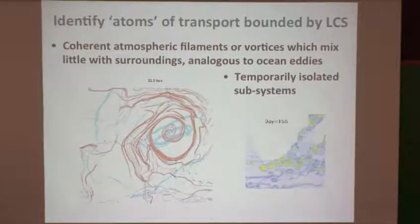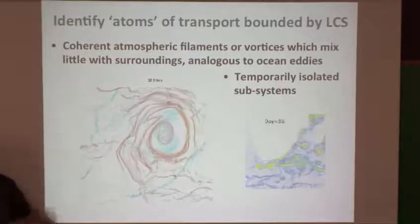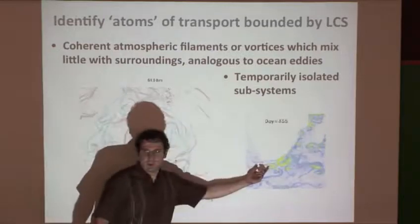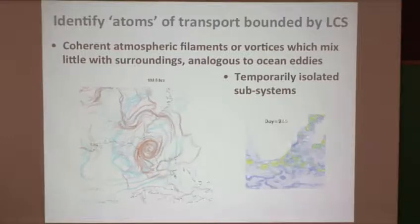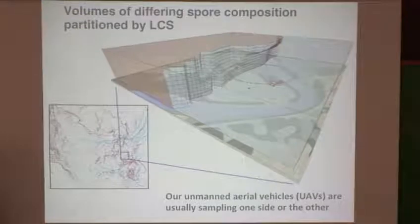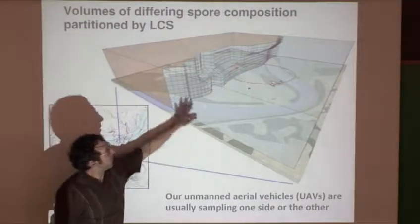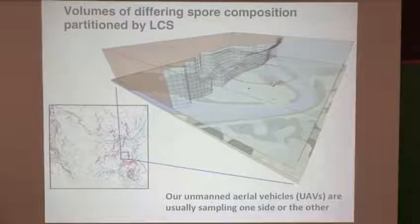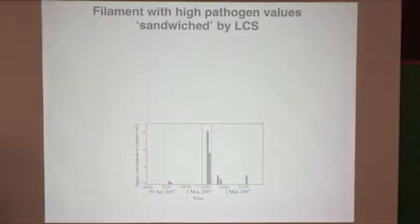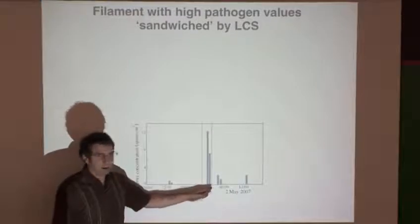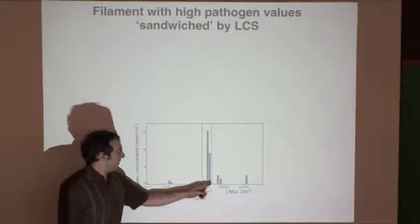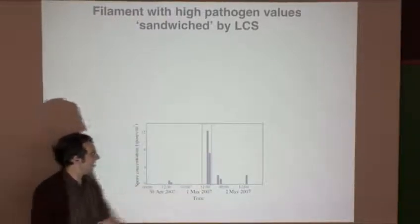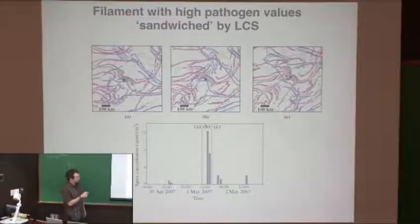We think high concentration regions are within atoms of transport bounded by LCS — similar to the eddies discussed this week transporting chlorophyll and warm water across the Atlantic. This is an artist's rendering of what it looks like near our sampling location, called Ketland Farm, with an LCS passing over. When sampling, we assume we're on one side or the other of some significant, distinguished material surface. Using archived NOAA data, when LCS were passing over our sampling location, they nicely partition the very high concentration sampling time.